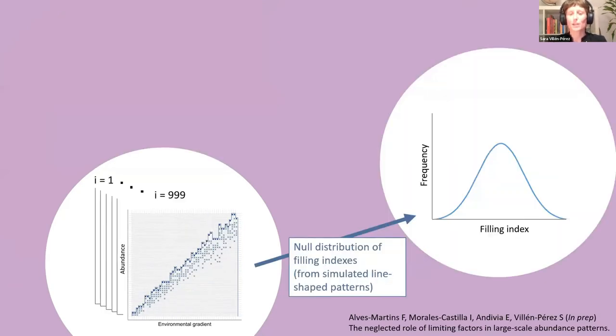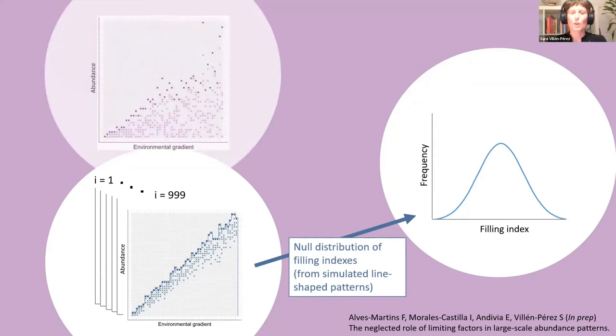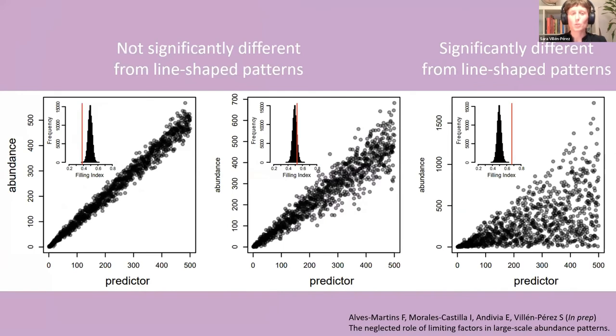To test it, we created simulations for line-shaped patterns. With that, we create null distributions of filling indexes and compare that with the observed filling index we want to test. We are able to distinguish between distributions that are not significantly different from line-shaped patterns and distributions that are significantly different from line-shaped patterns. This is not published yet, but we hope it will be soon. We expect that it will help researchers to be aware of the shape of their distributions and thus the theory and methods that should apply to analyze them.